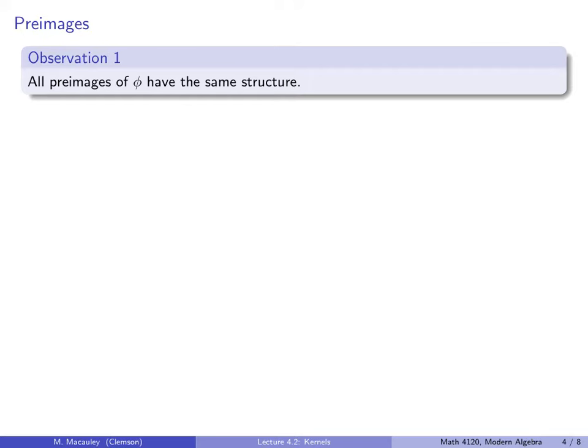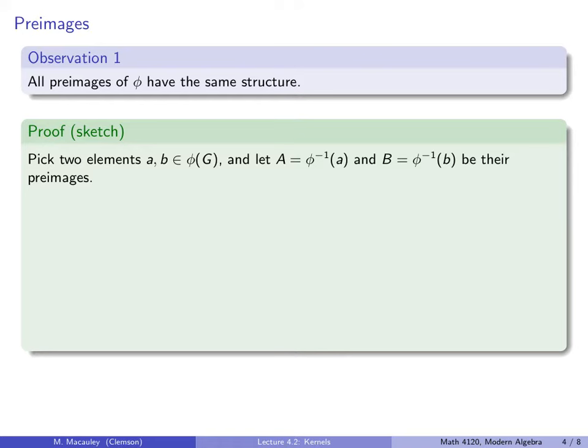Let's make some observations about preimages. Observation one: all preimages of phi have the same structure. I'm not going to prove this formally — we'll do that pretty soon, once we understand exactly how these things have the same structure. But let me give you a sketch of a visual argument that should at least motivate why this is true.